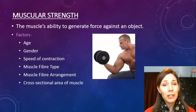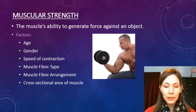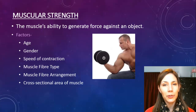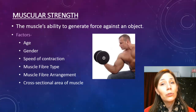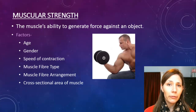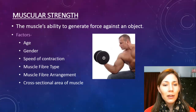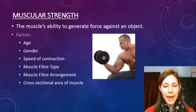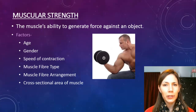Muscular strength is the muscle's ability to generate force against an object. There is a trade-off between force and speed: the faster you try to contract your muscle, the less force you'll be able to generate, and vice versa. This is influenced by age and gender — males are more likely to have greater muscle mass and therefore greater muscular strength. Your cross-sectional area of the muscle also matters — basically the bigger the muscle, the more force it can generate — as well as how the fibers are arranged within that muscle.